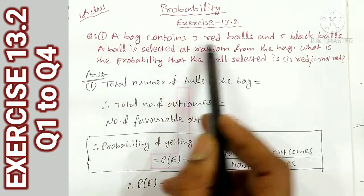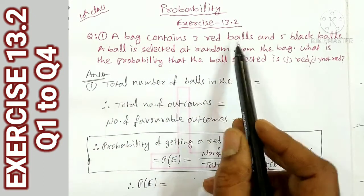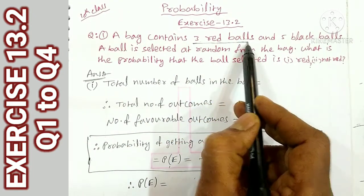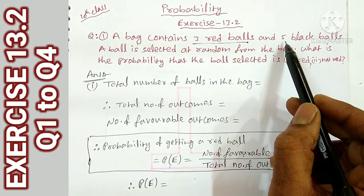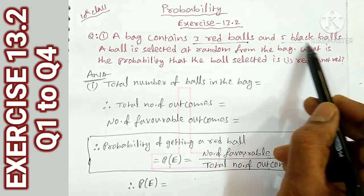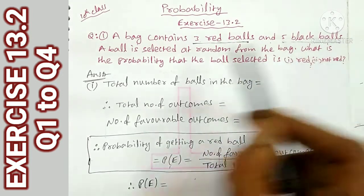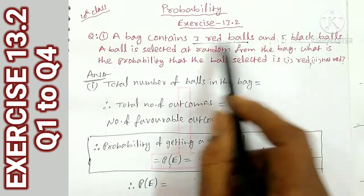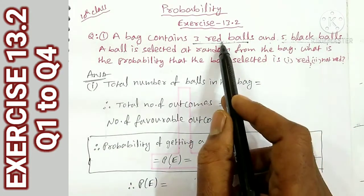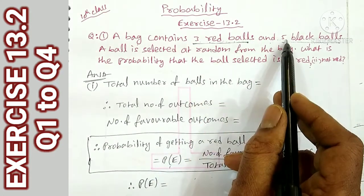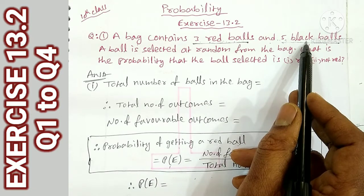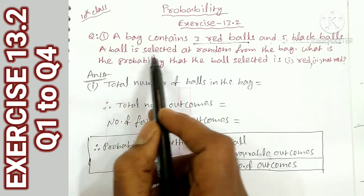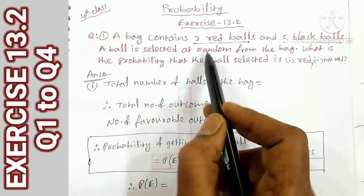First question: A bag contains 3 red balls and 5 black balls. So there are 8 balls total in the bag. A ball is selected at random.